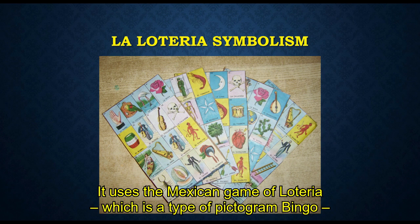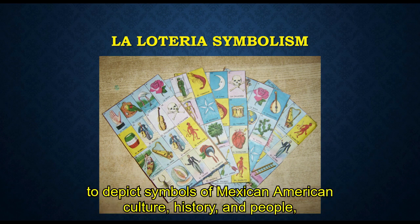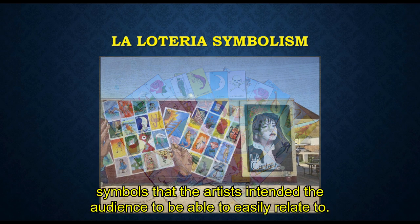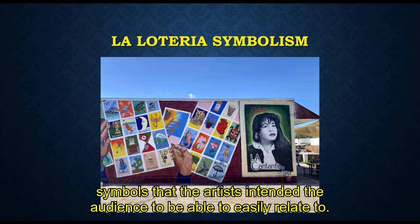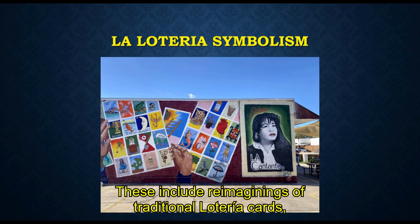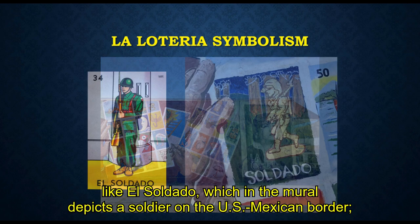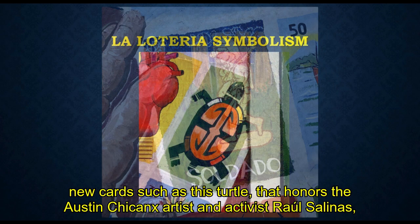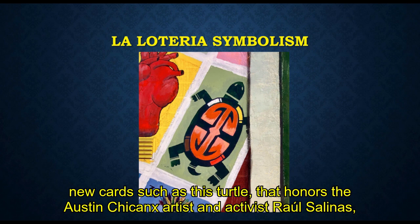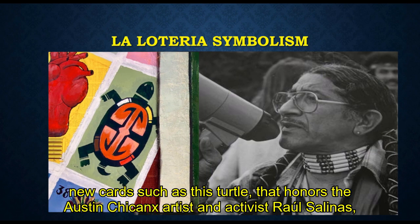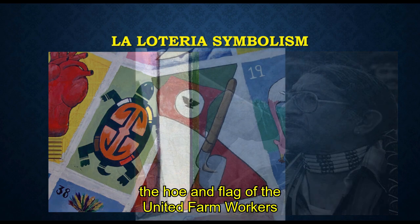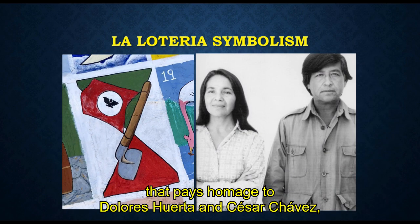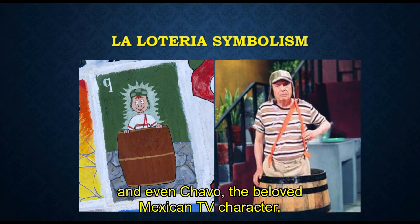The mural uses the Mexican game of Lotería, which is a type of pictogram bingo, to depict symbols of Mexican-American culture, history, and people — symbols that the artist intended the audience to be able to easily relate to. These include re-imaginings of traditional Lotería cards like El Soldado, which in the mural depicts a soldier on the U.S.-Mexican border, new cards such as a turtle that honors the Austin Chicanx artist and activist Raul Salinas, the hoe and flag of the United Farm Workers paying homage to Dolores Huerta and Cesar Chavez, and even Chavo, the beloved Mexican TV character.